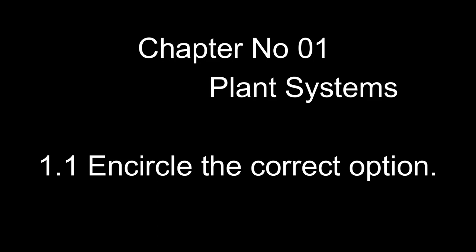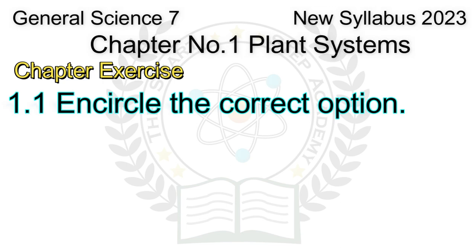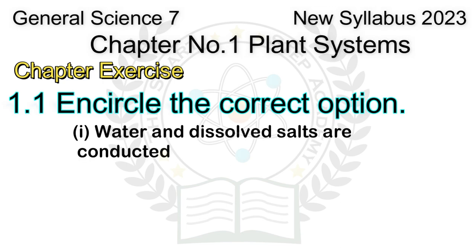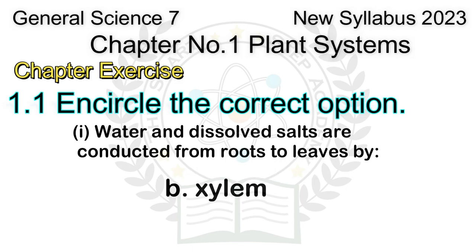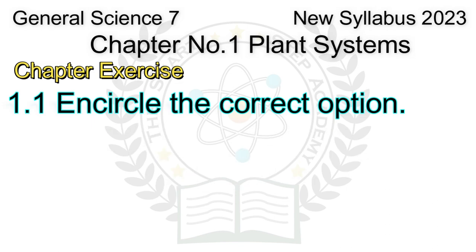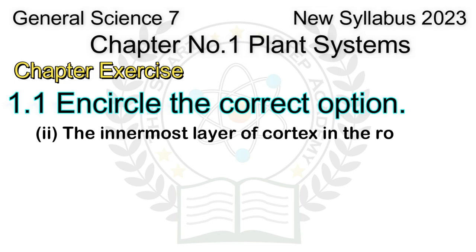Chapter 1: Plant Systems. Chapter Exercise 1.1 — encircle the correct option. Question 1: Water and dissolved salts are conducted from roots to leaves by: A. Root hairs, B. Xylem, C. Phloem, D. Stomata. Answer: B. Xylem.